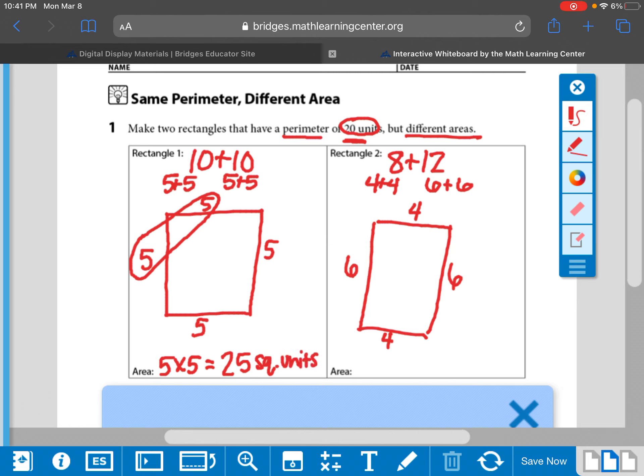And the area over here is 6 times 4. 6 times 4 is 24. That one rhymes so you can always remember it. So our area over here is 24 square units.